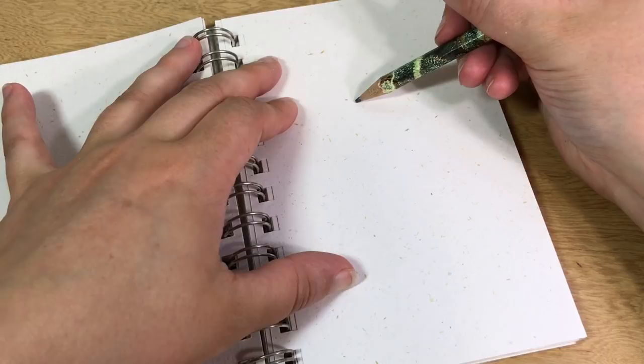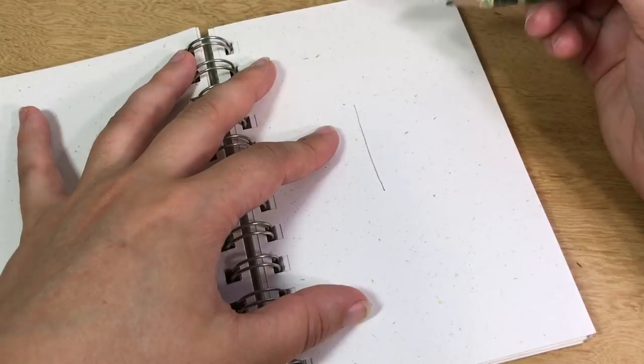drawing one line down on the paper. You don't want to push too hard, leave it a little bit light so if you make any mistakes you can erase them. Now about three-quarters of the way down we're gonna make